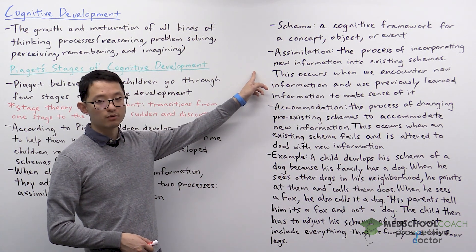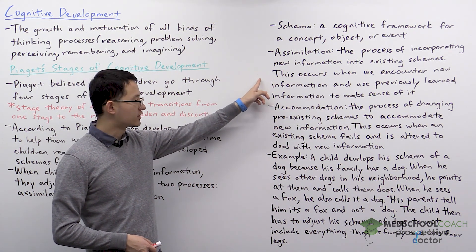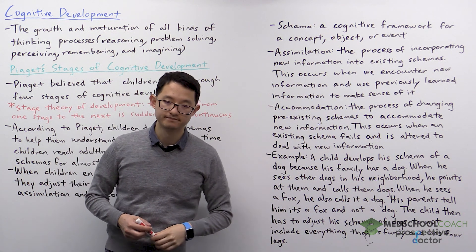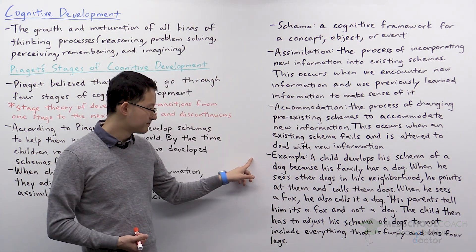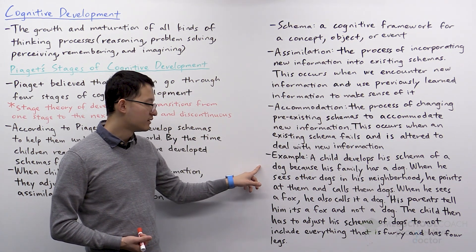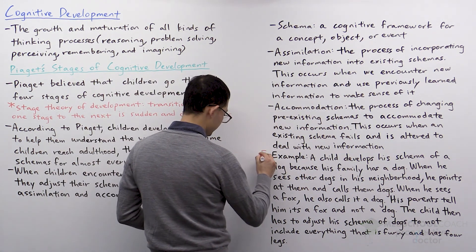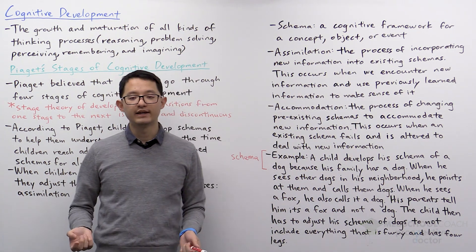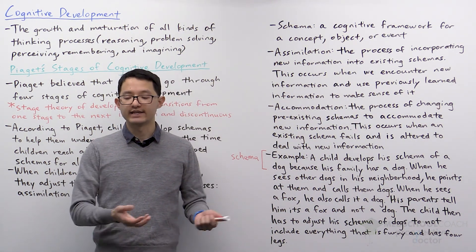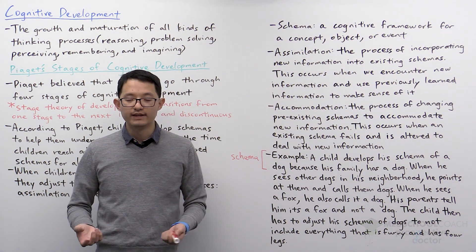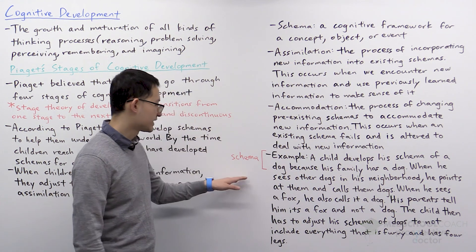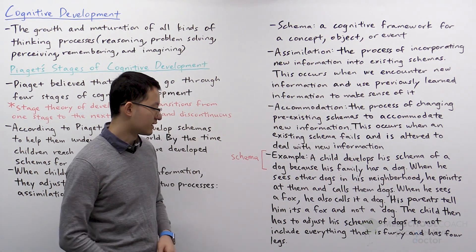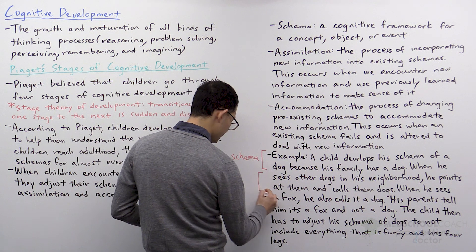Assimilation is the process of incorporating new information into existing schemas. This occurs when we encounter new information and use previously learned information to make sense of it. For example, a child develops a schema of a dog because his family has a dog — the family tells the child that this animal is a dog, so the child's schema of a dog is the family's dog. When the child goes outside and sees other dogs in his neighborhood, he points at them and calls them dogs. This is an example of assimilation.